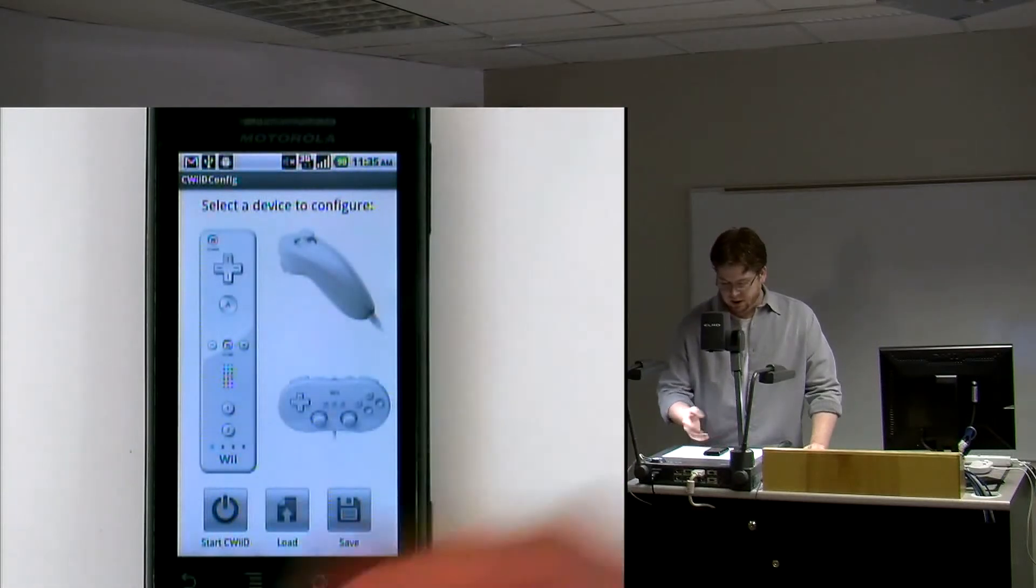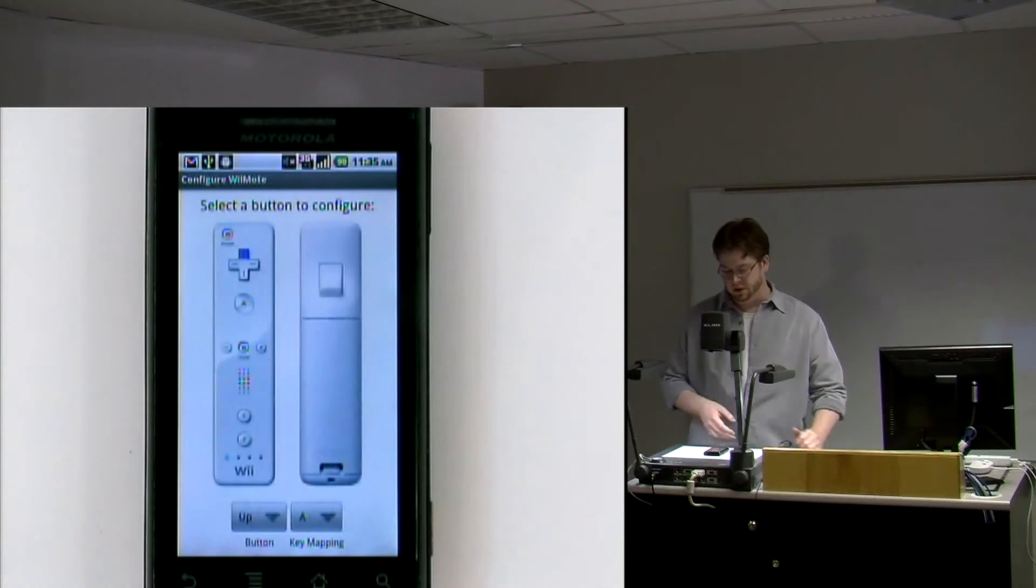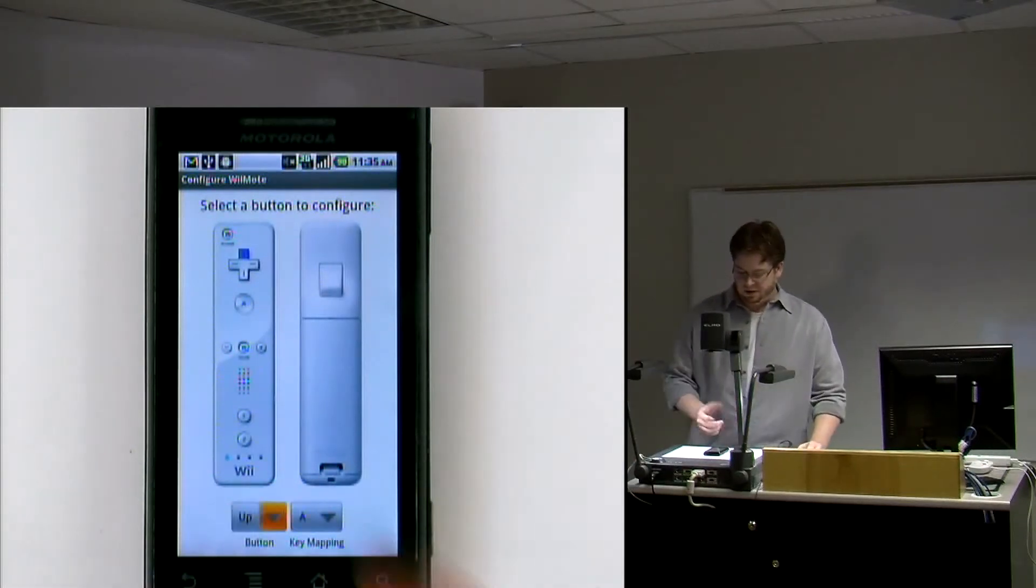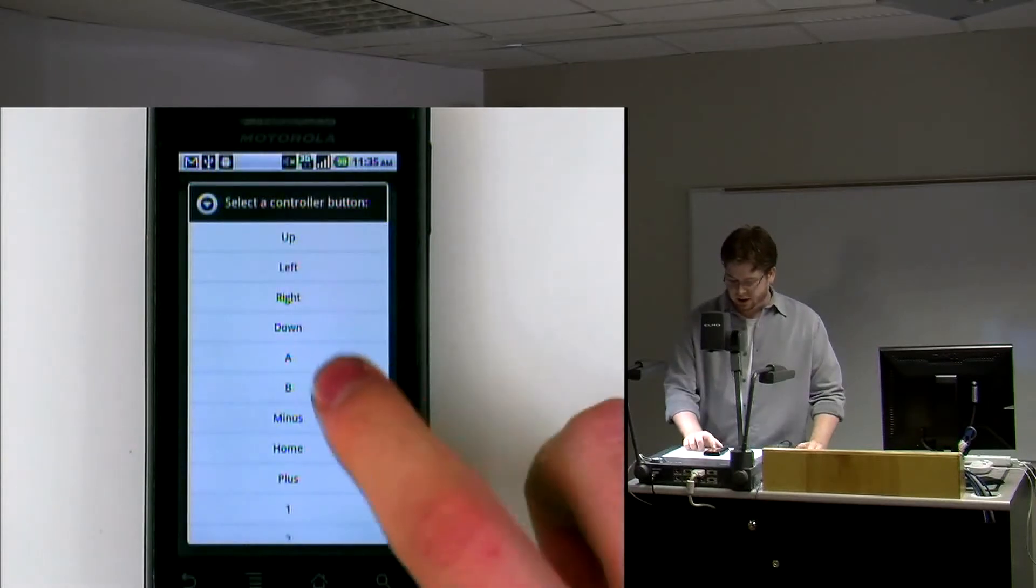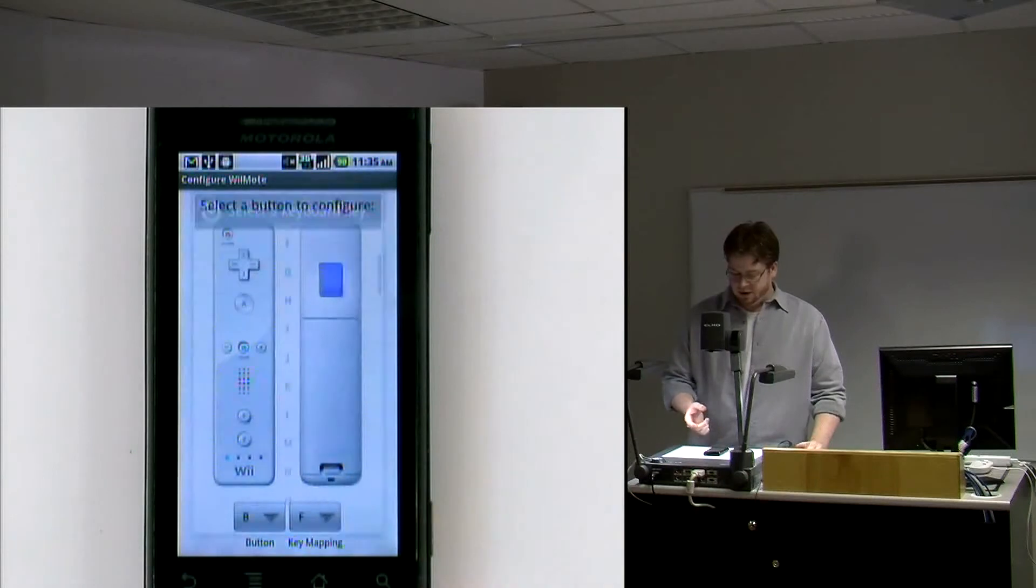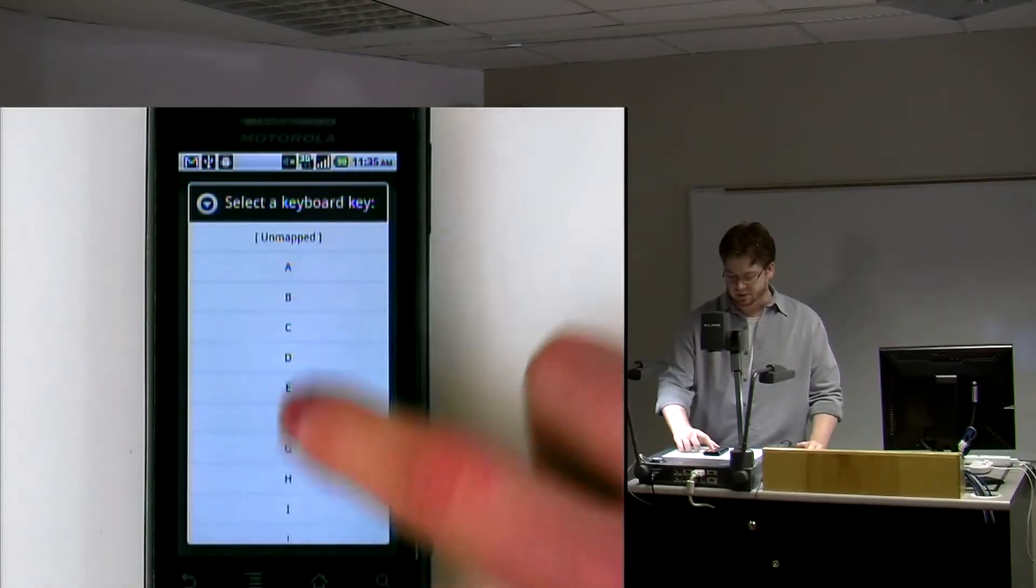So to configure the device, you first have to select a piece to configure. This is the generic configuration page for a given device. You'll notice that the up button is highlighted because we have our up button selected down here. You basically first select a button, and when you select that button it'll highlight it on the image. You then select a key mapping, which is any list of these keys, or you can select unmapped as well.